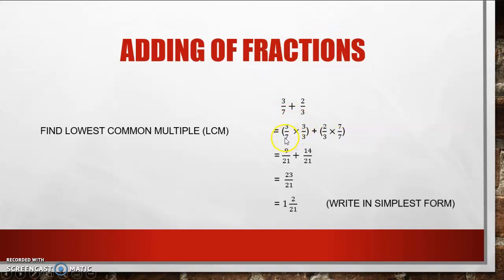So how do I get to 21 from 7? I must always multiply whenever we talk of multiples. So what I do at the bottom with the 7, I must do at the top with the 3. Why? Because 3 over 3 is a whole, equal to 1, and the property of multiplication with 1 is it stays the same. The value of any number multiplied with 1 does not change, and therefore 3/7 will be equal to 9/21. Then I need to change my second fraction and multiply with 7 over 7, which will be 14/21.